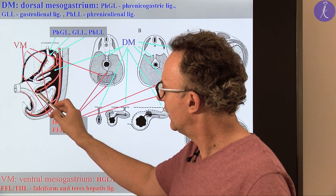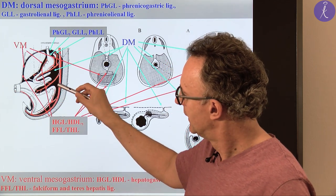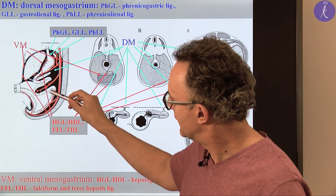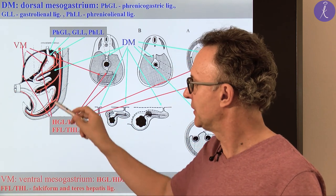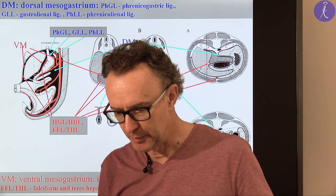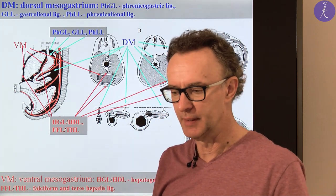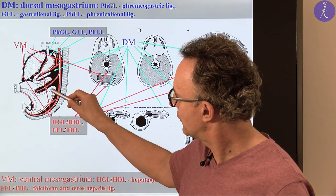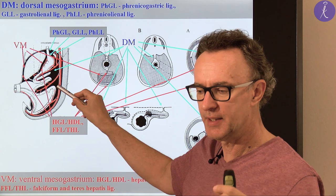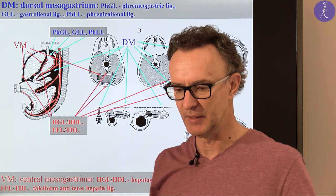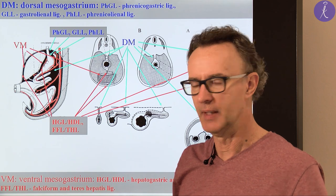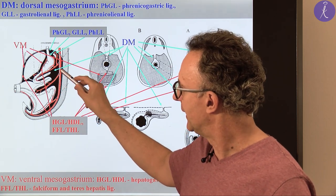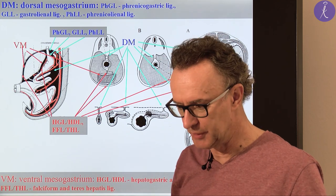The borderline between the midgut and hindgut is the primitive colic flexure. This corresponds in gross anatomy to the transition of the proximal two-thirds and distal one-third of the transverse colon. That's why this is the borderline in the blood supply between the superior mesenteric and inferior mesenteric artery — this is where we have the famous arch of Riolan.